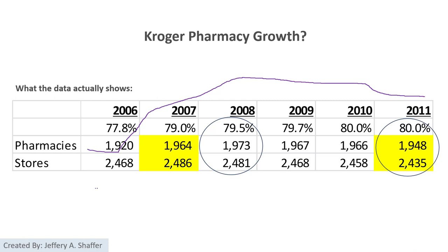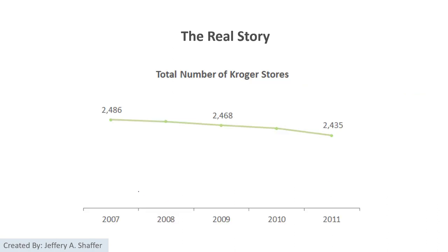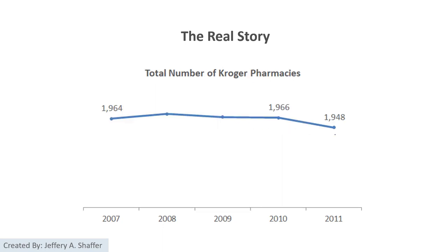For the number of stores, they increased initially and then had a constant decline. Looking at the total number of stores, we see a constant declining over a few years. And we also see a slight increase, but still a little bit of declining, in the number of pharmacies.